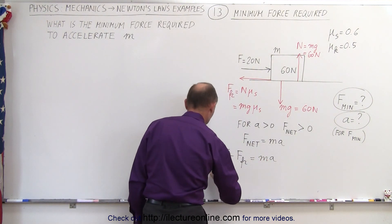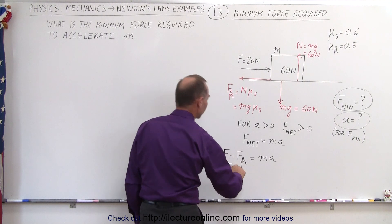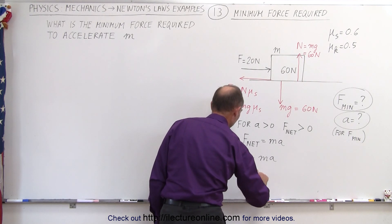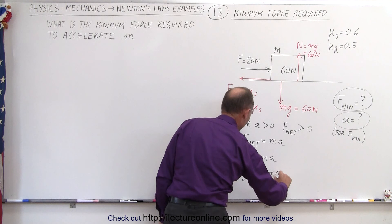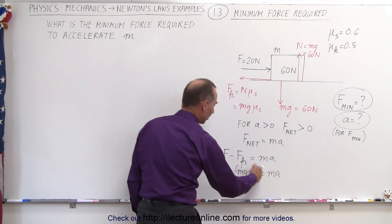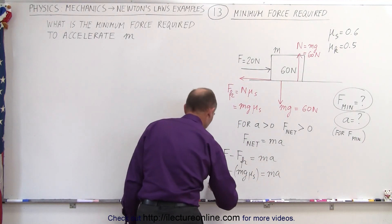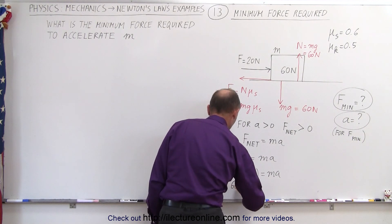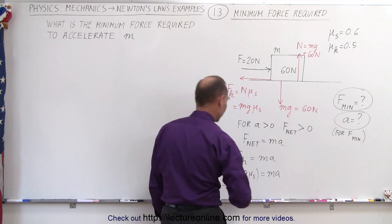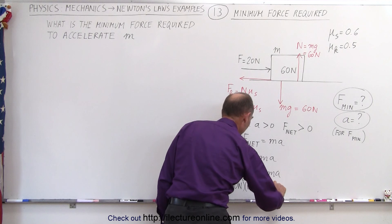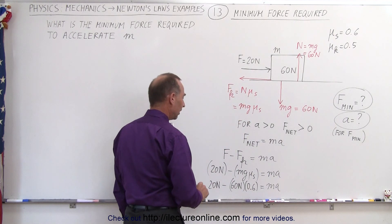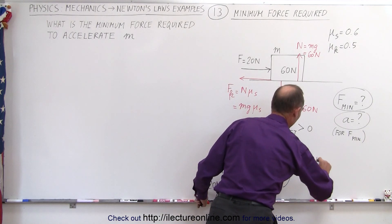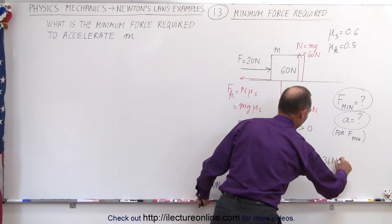The force applied is 20 Newtons, and we subtract the friction force, which is mg × μ_s, and that should equal ma. To have an acceleration, this must be greater than zero. So we have 20 Newtons minus mg (which is 60 Newtons) times the coefficient of static friction (0.6), equal to ma. Multiplying that out: 20 Newtons minus 36 Newtons equals ma.